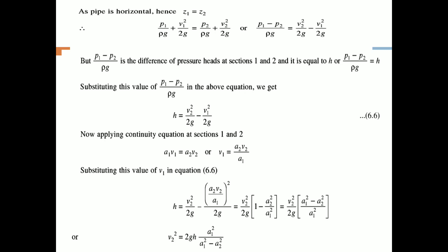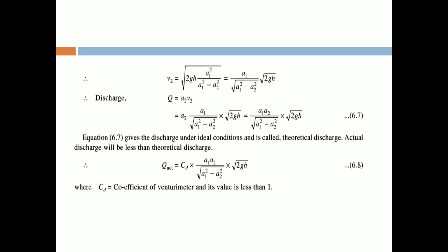This is equation 6.7: Q equals A1 A2 divided by the square root of (A1 squared minus A2 squared), multiplied by the square root of 2Gh. This gives the theoretical discharge under ideal conditions. The actual discharge will be less than the theoretical discharge and is given by: Q actual equals Cd times A1 A2 divided by the square root of (A1 squared minus A2 squared), times the square root of 2Gh, where Cd is the coefficient of the venturimeter and its value is less than 1.